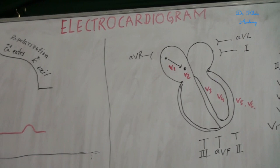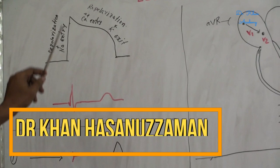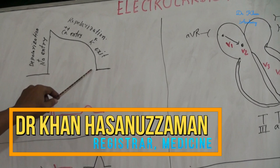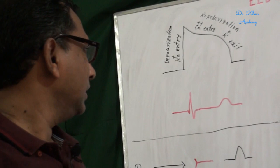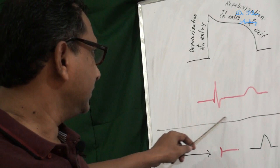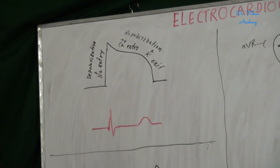When an electrode is directly placed on myocardium, the electrical activity of the cardiac muscle is presented by this graph. This is depolarization caused by sodium entry, and this is repolarization caused by calcium ion entry and potassium exit. But when an electrode is directly placed on the chest wall, the electrical activity is presented by this graph. This is the QRS complex which represents depolarization, and this is the ST segment and T wave which represents repolarization.